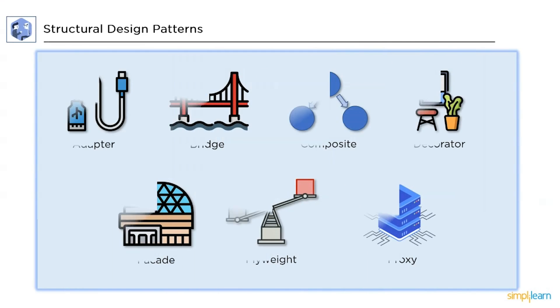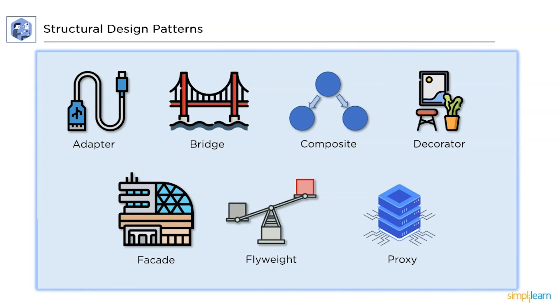The structural design pattern is used to manage the structure of classes and interfaces as well as the relationships between classes. We have seven types: adapter, bridge, composite, decorator, facade, flyweight, and proxy.